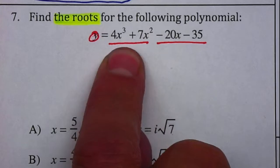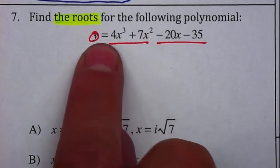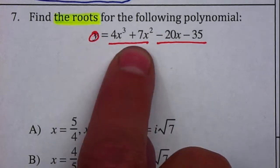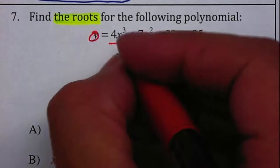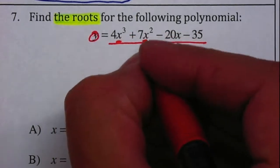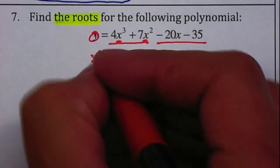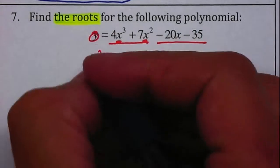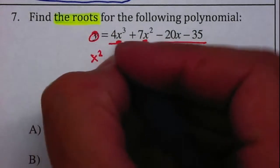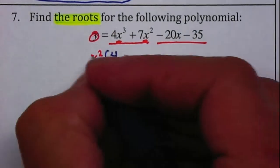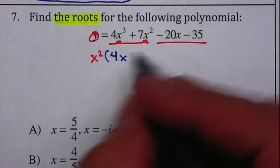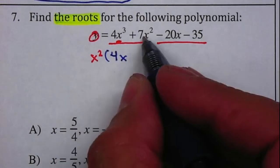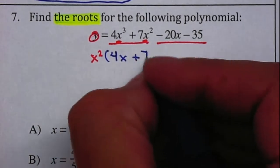First, what can I factor out of the first two? Is there a number that divides four and seven? No. Do they both have an x? Yes. This one has three x's and this one has two, so I can factor out x squared. What I need to multiply x squared by to end up with 4x³ will be 4x. What I need to multiply x squared by to end up with 7x² will be positive 7.